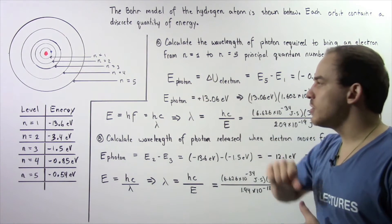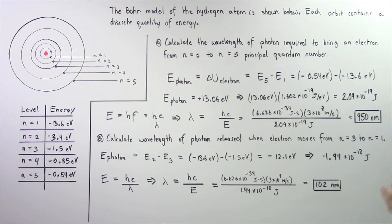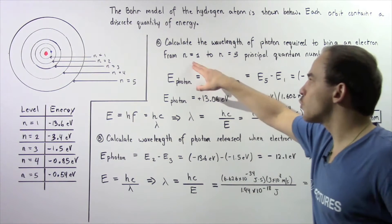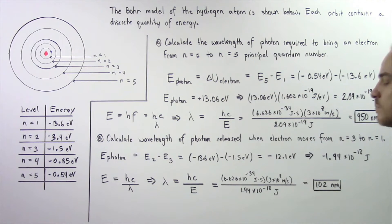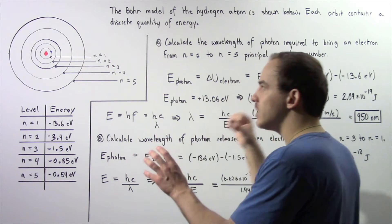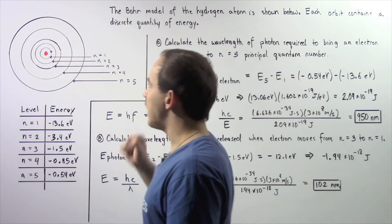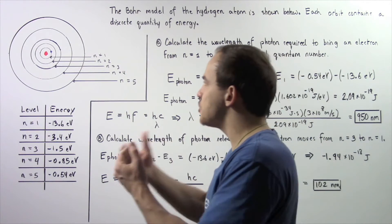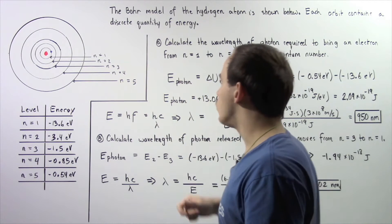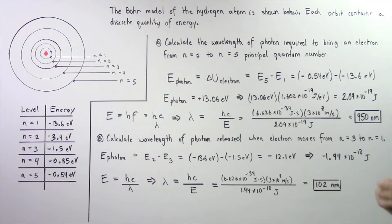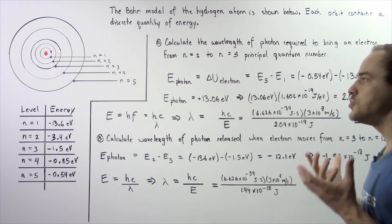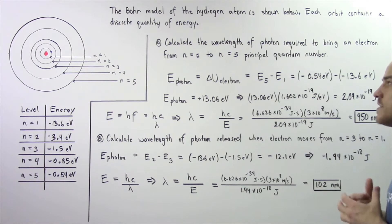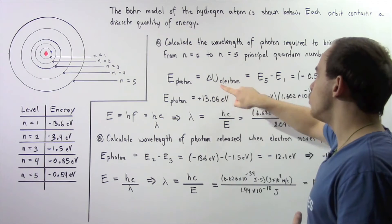Let's begin with Part A. In Part A, we want to calculate the wavelength of the photon that is required to bring an electron from the ground state, n equals 1, to a principal quantum number of n equals 5. We want to collide the photon with that electron so that it absorbs all that energy and jumps from n equals 1 to n equals 5. The quantity of energy that photon has, E photon, is equal to the change in electric potential energy of that electron, given by change in U electron.